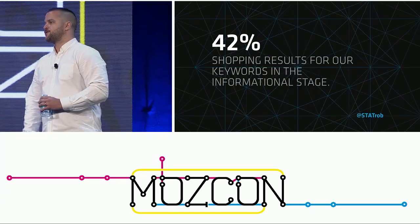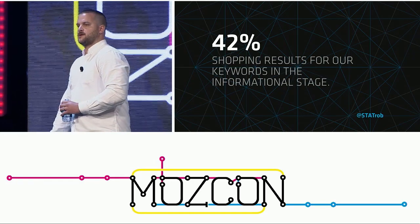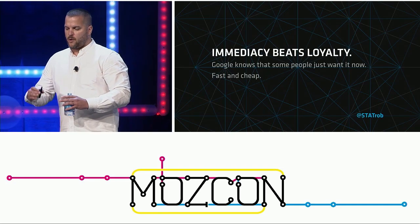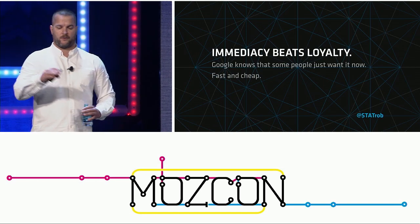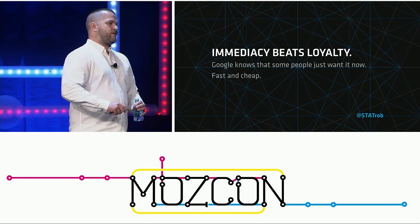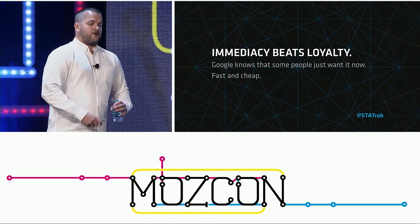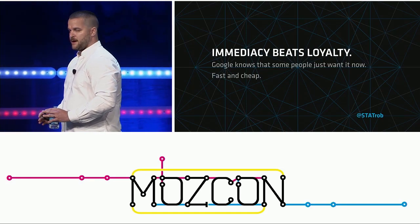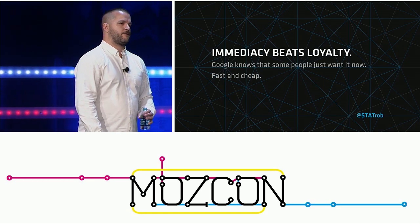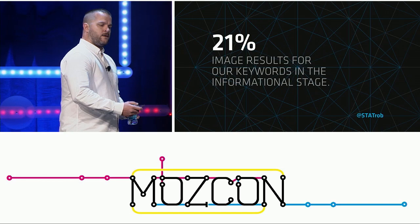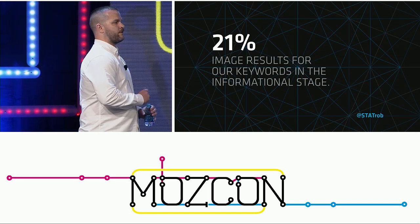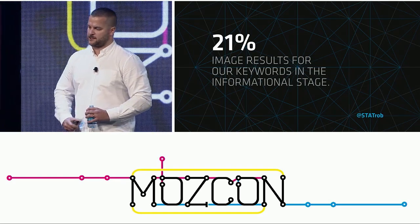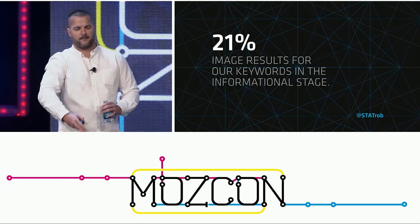This is the topology of the informational SERP — a count of non-organic result types at informational-stage keywords. It tells us what kind of moments searchers are having. We see a lot of shopping, images, news, video, people also ask, answer boxes (featured snippets), and places. At 42% of our leverage in the informational stage, shopping results dominate. Here's what Google knows: when people use super short-tail core product terms, there's a high likelihood they just want to buy it right then — fast and cheap. Google is auctioning off immediacy to the highest bidder.